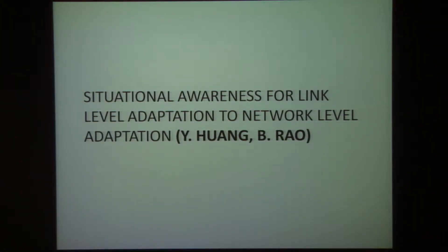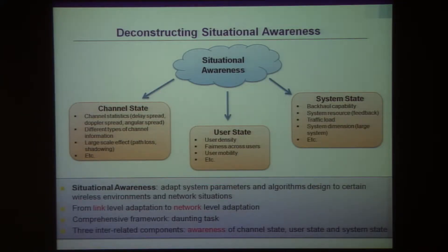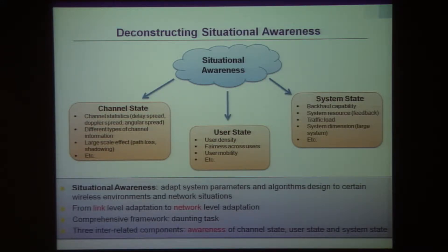This is the work that my student has been doing. Our goal is still to figure out how to include learning and memory, if possible, into the network. When we think about cognition or awareness, we want to break it down into different types. Our focus is either at the link level or at the network level — if you're looking at a heterogeneous network, it's at the network level; if you're looking at a single link, it's about channel properties.